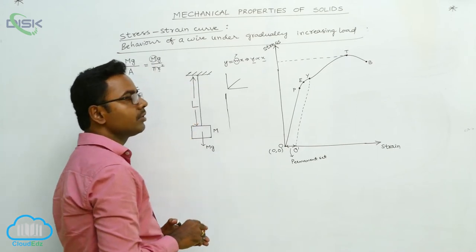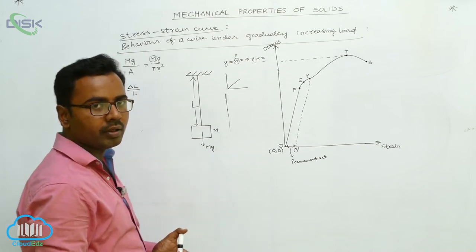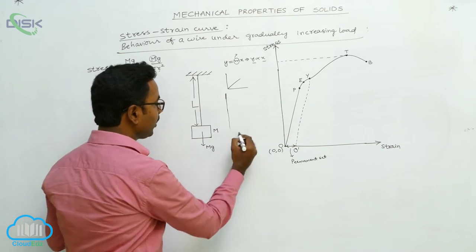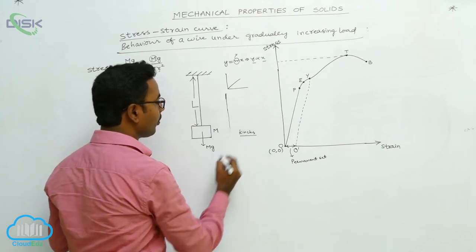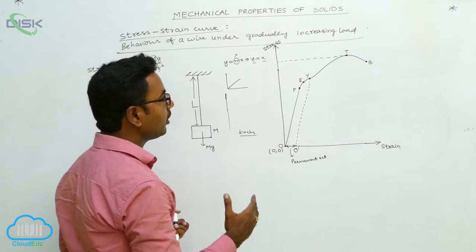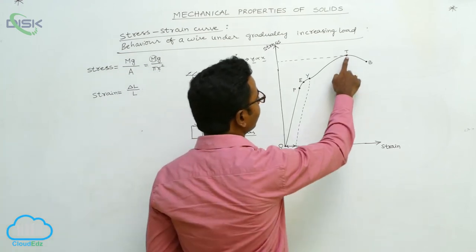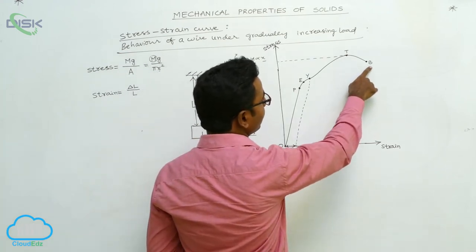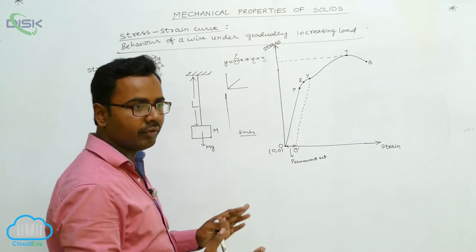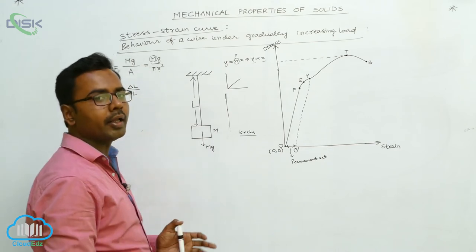After crossing point T, the thinning of the wire becomes non-uniform and kinks are produced. The wire cannot withstand the load and is going to break. As the wire breaks down at point B, the stress decreases. Point B is called the breaking point.